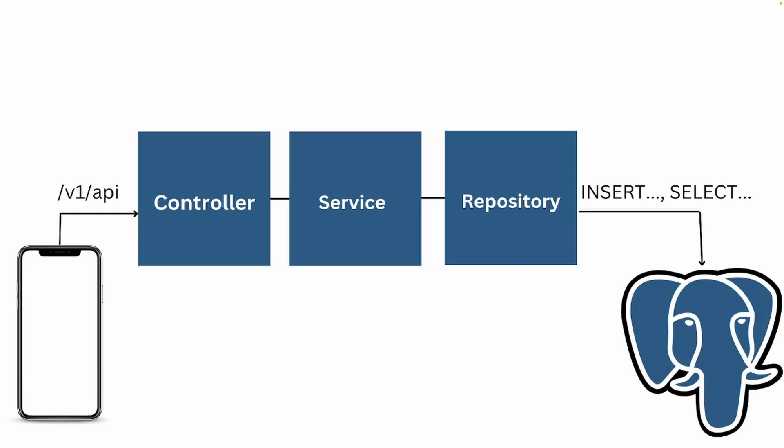The phone represents the initial entry point into our application — that's how we're going to request information. A user on our website might make a request to get information, to store information, or to delete information. That request points to our controller in the Spring Boot application. The controller is used to handle incoming requests in the proper structure that is needed.